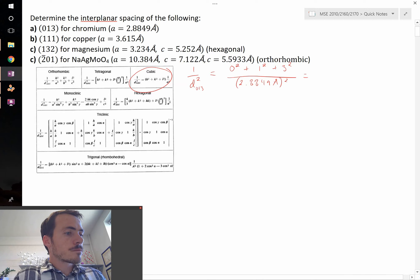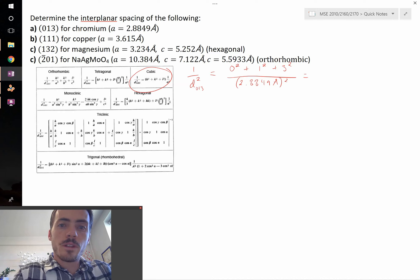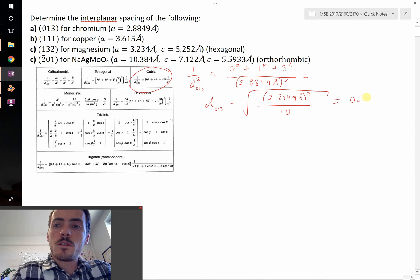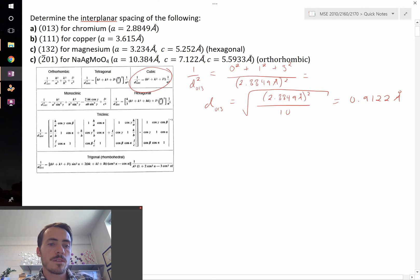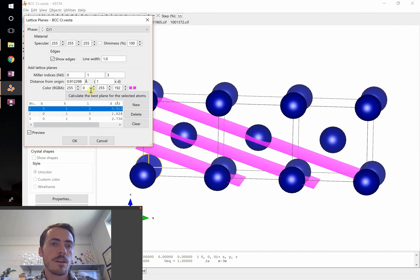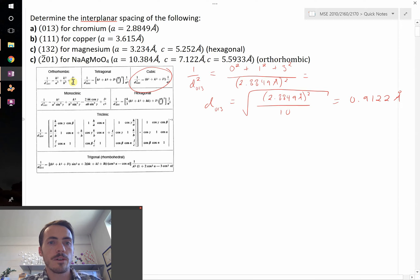All of that divided by a squared, which in this case is 2.8849 angstroms squared. When I plug that in and rearrange for d, d for the 0, 1, 3 plane is going to be equal to the square root of 2.8849 angstroms squared, all divided by 10, since that's what 1 squared plus 3 squared equals. When I punch that into my calculator, I get 0.9122 angstroms. That's our d spacing. Let's double check that with Vesta. Chromium with 1d spacing came out to be 0.9122, so it's the same value.